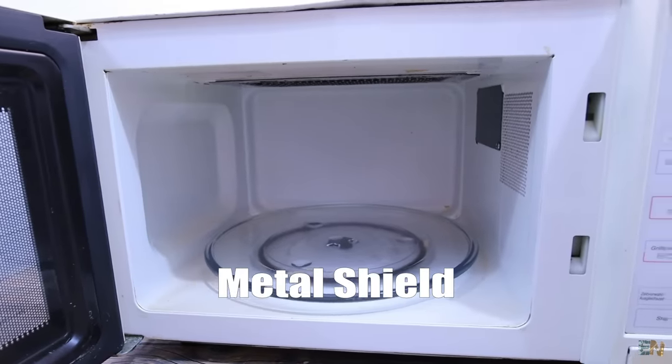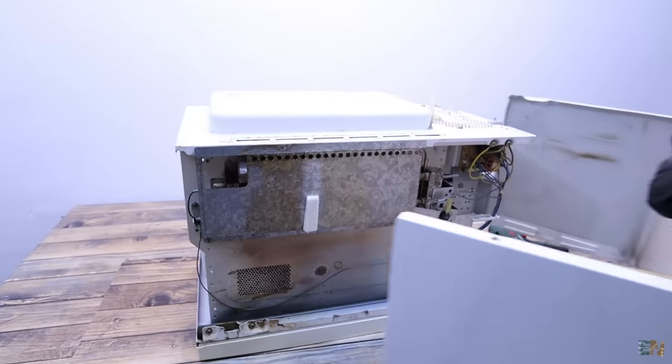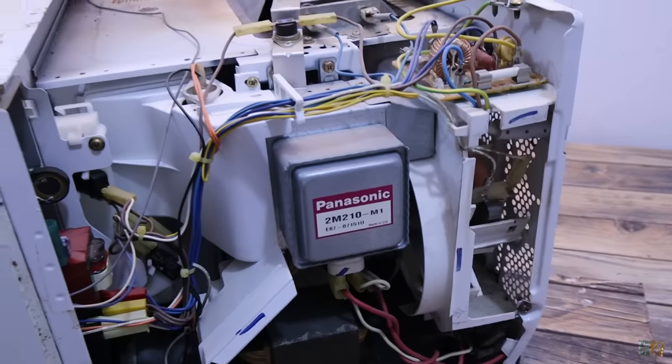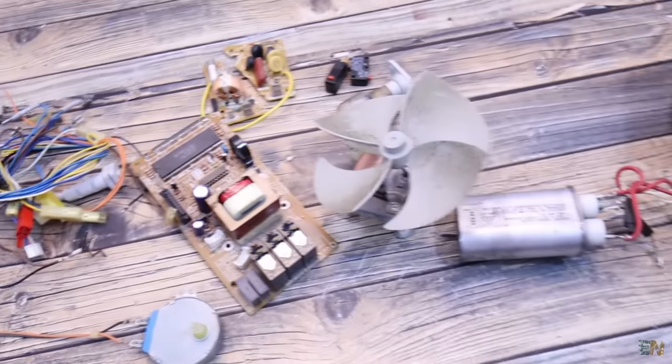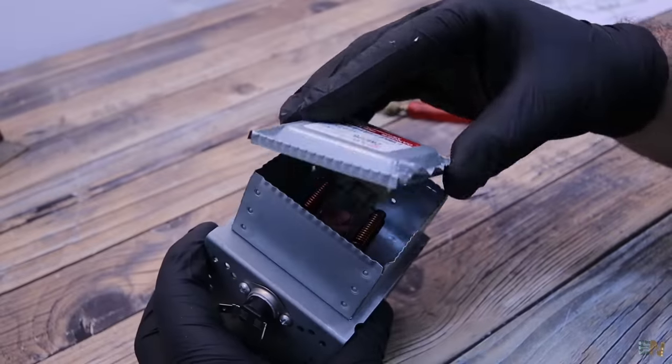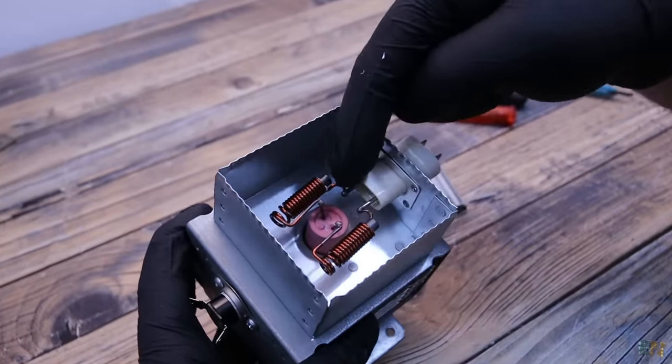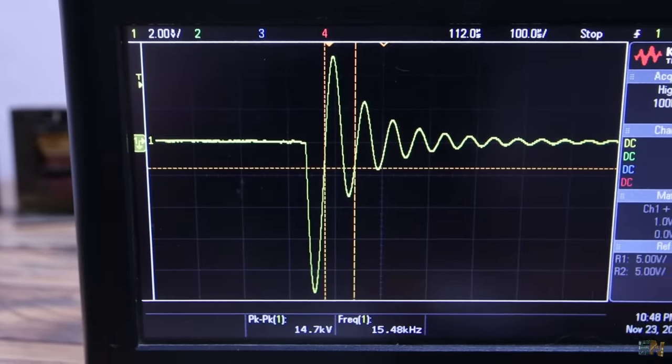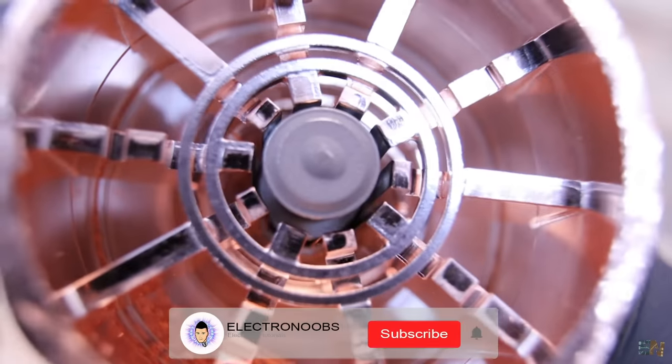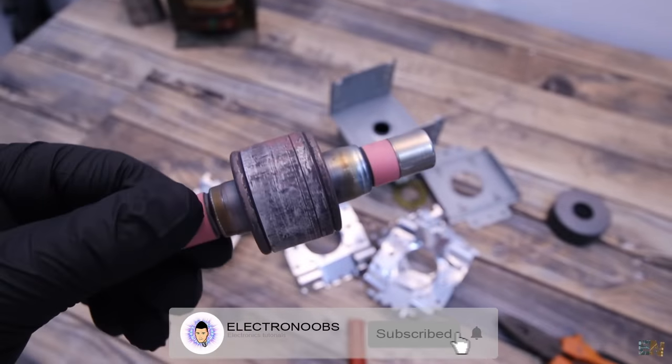In this video I'll tear down an old microwave, check what components it has inside one by one, and then I'll try to explain to you how a magnetron works and what it's made of.